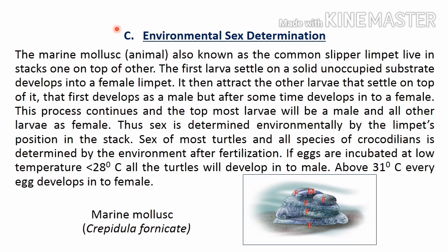The third category is environmental sex determination, where environmental factors are responsible for sex segregation. An example is the marine mollusk known as the slipper limpet. The first larva settles on unoccupied ground, secretes certain chemicals, and attracts another larva on top of it. The lowermost larva develops into a female and the larva that comes over it develops into a male. After some time, this second larva becomes a female and attracts another larva over it.